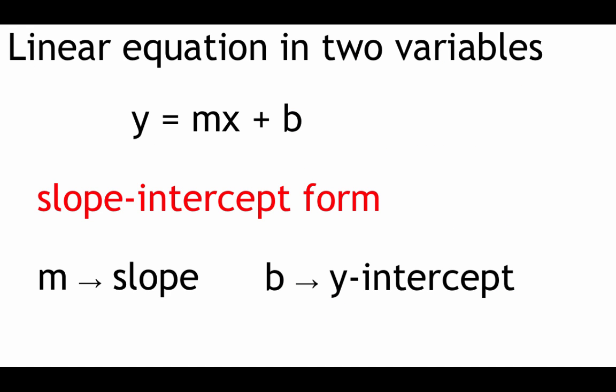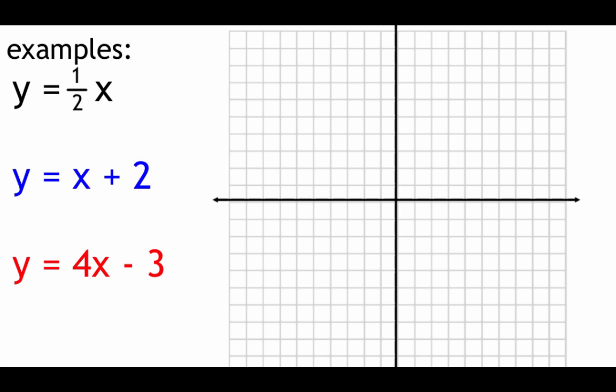Now that we've taken a look at slopes of lines, we're going to look at some different forms of linear equations. We're going to start by talking about y equals mx plus b, which is also known as slope-intercept form of an equation. It's called slope-intercept form because it gives you the slope as the m value, and it also gives you a y-intercept as our b value. We're going to use this slope-intercept form to graph out some equations.